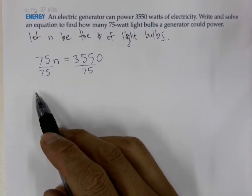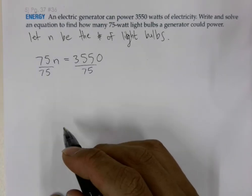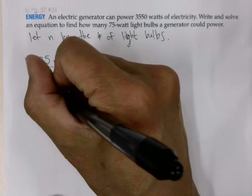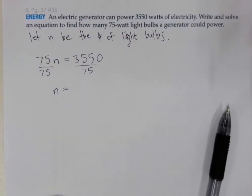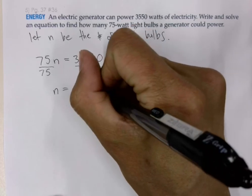On the left side of the equal sign, we have 75 divided by 75 is 1 times N, which is N, equal to 3550 divided by 75, which is equal to 47 and one-third.